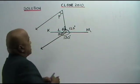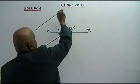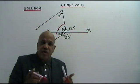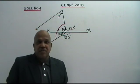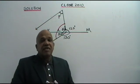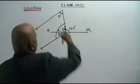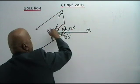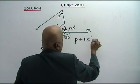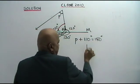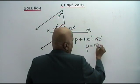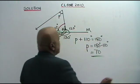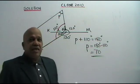Now these two lines are parallel. Therefore this angle and this angle are co-interior angles. The sum of co-interior angles is 180 degrees. Therefore, 50 plus 60 equals 110, and P plus 110 equals 180 degrees. Therefore P equals 180 minus 110. The answer is 70. The value for P is 70.